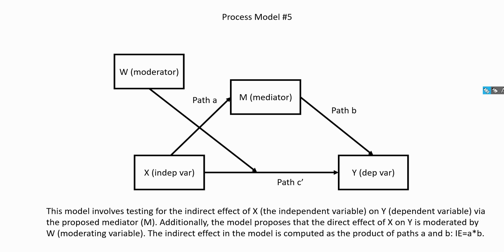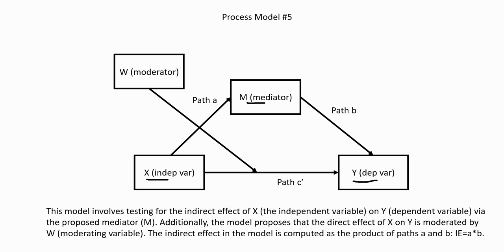So let's go ahead and get started by considering what PROCESS model 5 is actually doing. The model essentially allows you to test for mediation and moderation in the same model. As you're looking at this diagram, you'll notice that we have our X variable — that's our independent variable — our Y variable — our dependent variable — and a mediating variable, which I'm denoting as M.